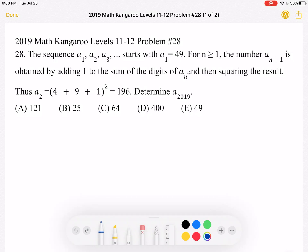The sequence A1, A2, A3, and so on starts with A1 equals 49. For n greater than or equal to 1, the number an plus 1 is obtained by adding 1 to the sum of the digits of an and then squaring the result.